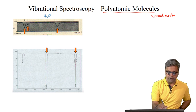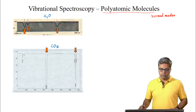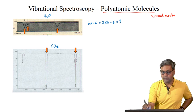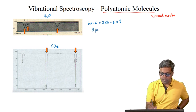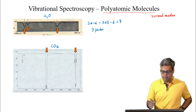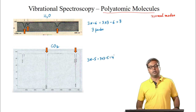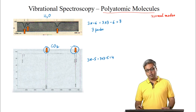This is the IR spectrum of water and this is the IR spectrum of carbon dioxide. Water has 3n-6, that is 3×3-6, that is 3 vibrations because water is nonlinear, and also 3 peaks are observed in the IR spectrum. For carbon dioxide, because carbon dioxide is linear, there are 3n-5, that means 3×3-5, that is 4 vibrations. However, only 2 peaks are observed in the IR spectrum.